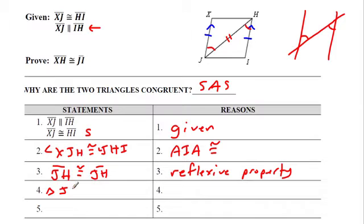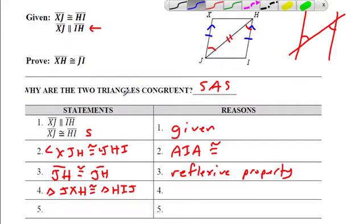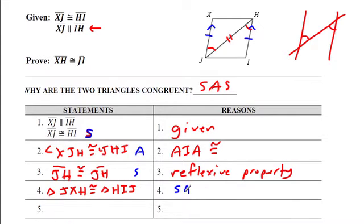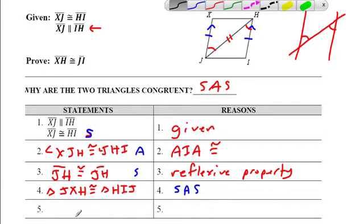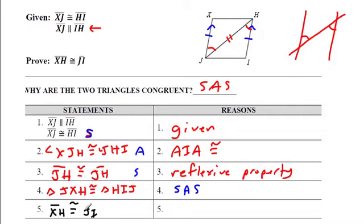Now I can prove the triangles congruent. Be real careful with naming them correctly. Triangle JXH is congruent to triangle HIJ — J matches H, X matches I, H matches J. I proved these are congruent using side-angle-side: here's a side from the given, the angle I proved, and the reflexive side. That's SAS right there. Now I add one more step: since they're congruent, XH is congruent to IJ. Why? Because of CPCTC — Corresponding Parts of Congruent Triangles Are Congruent. Only because I proved the triangles congruent can I say that. CPCTC — I love it.